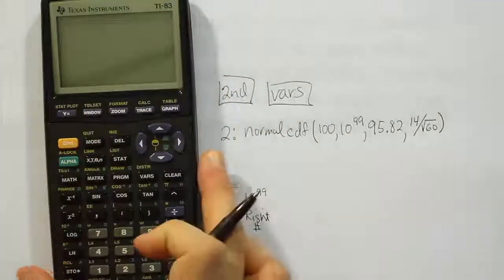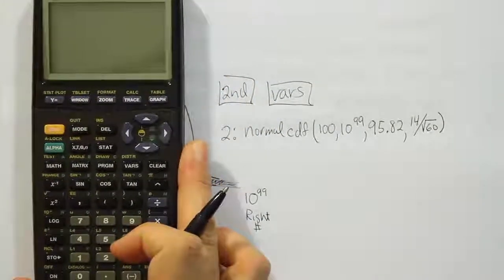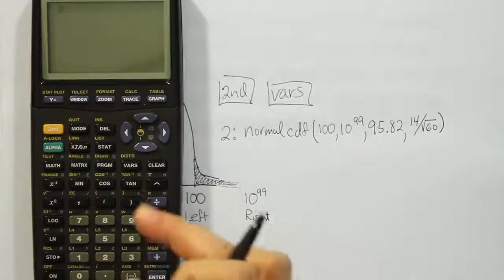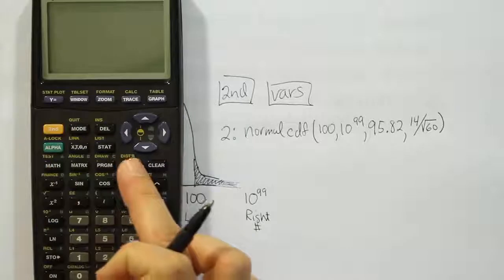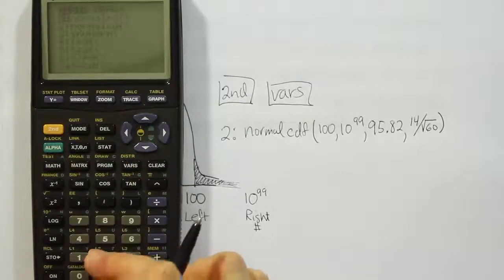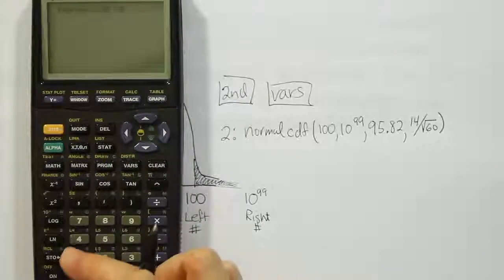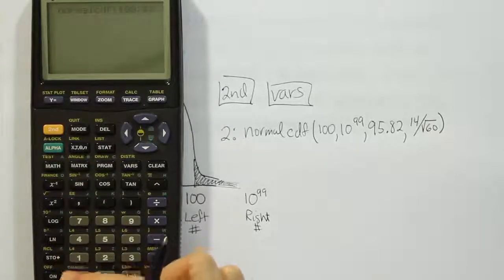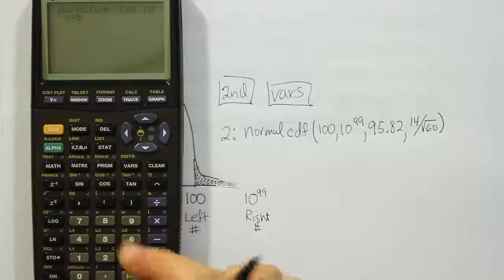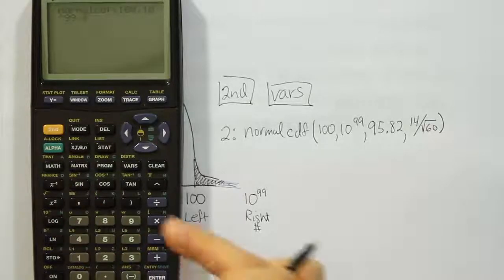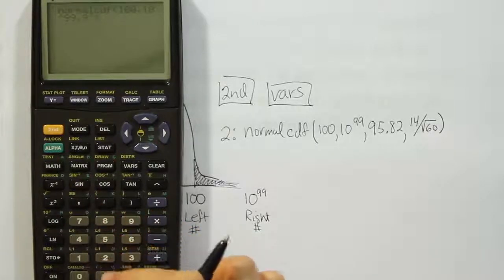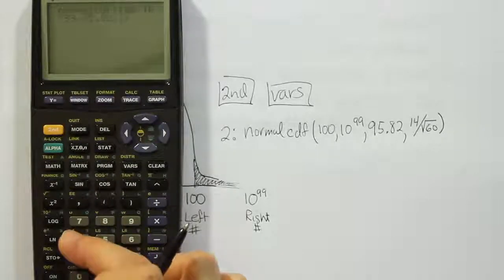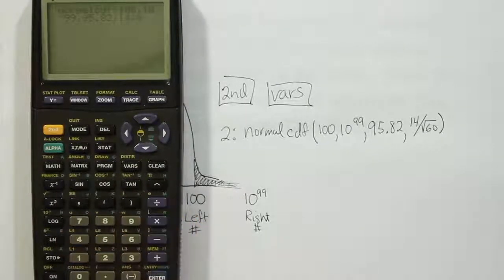So here's my graphing calculator and we're going to say we're doing second vars, take option number 2, then we're going to enter 100, the left bound of the shaded region, comma 10 to the 99th power which is the right bound of the shaded region. Then the mean 95.82.